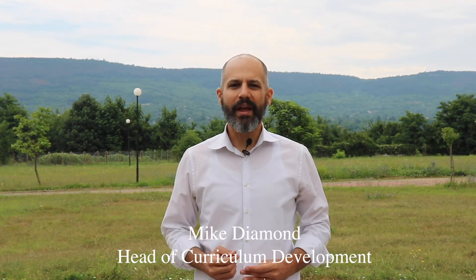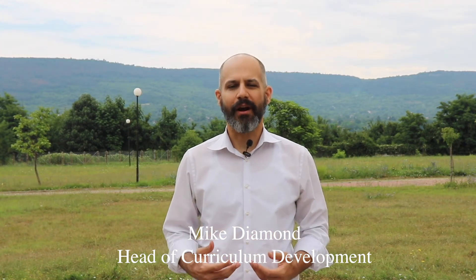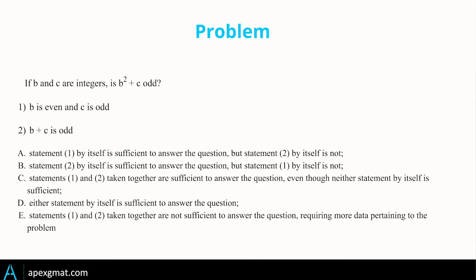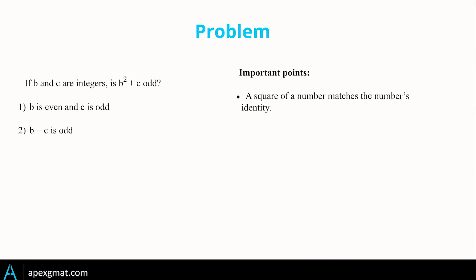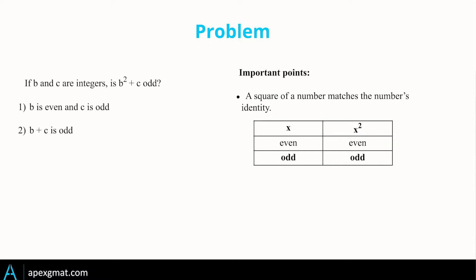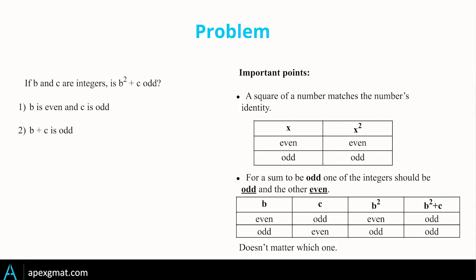I'm here with a number theory data sufficiency problem, and like many others we're going to look at this problem structurally as well as mathematically. Looking at the stem, the first thing we're struck by is the idea of evenness and oddness. One of the elements is squared — b² — and no matter what b is, even squared is even and odd squared is odd. Also, because we're adding two things together, for the sum to be odd one must be odd and the other must be even.